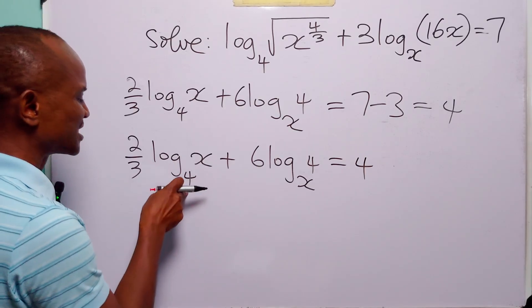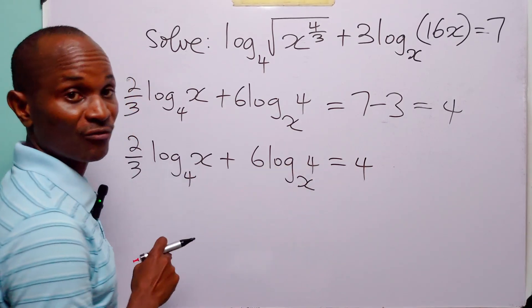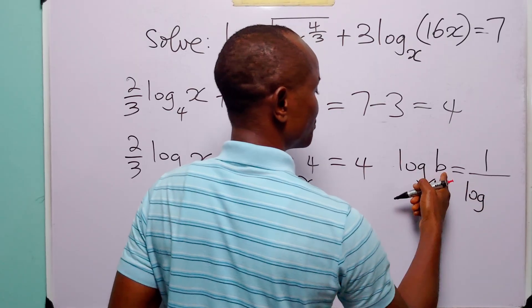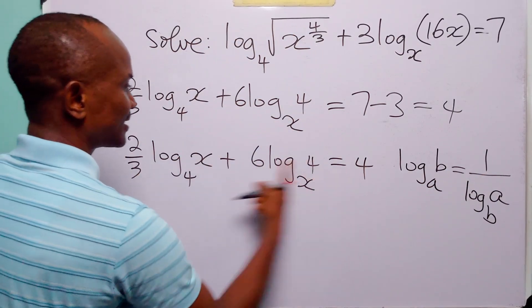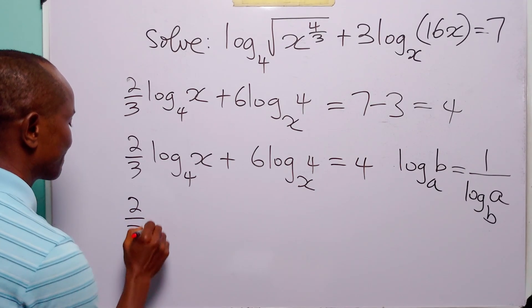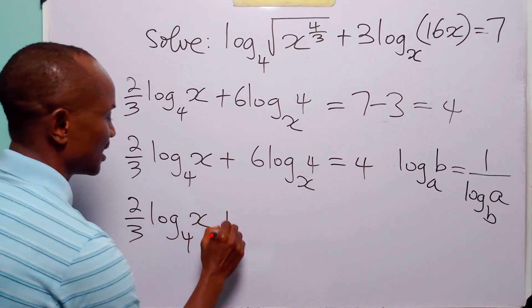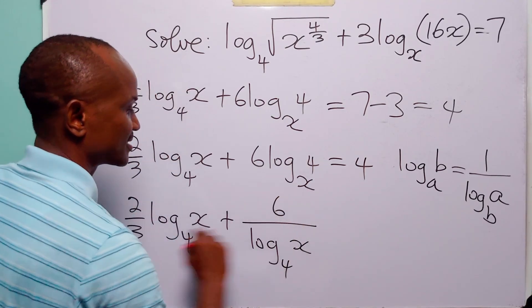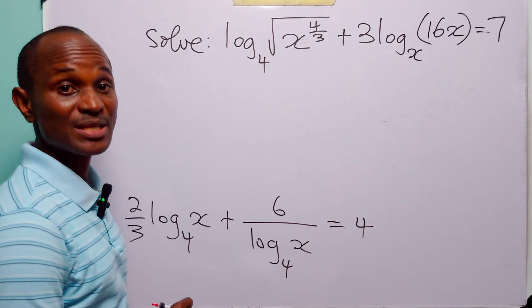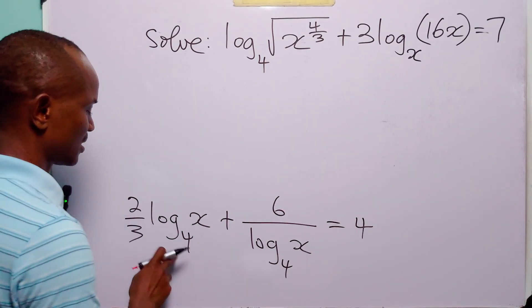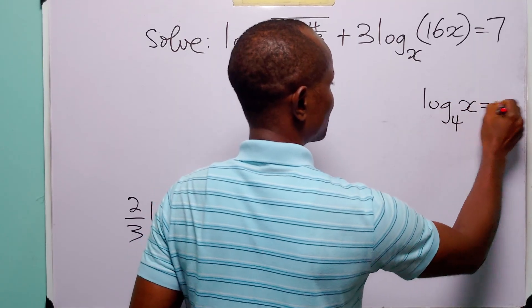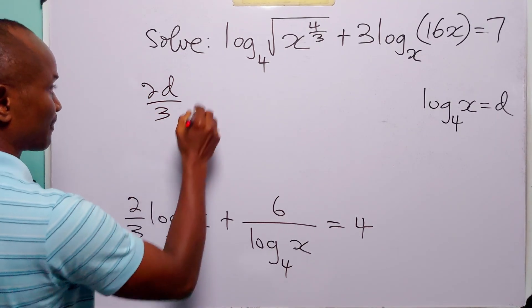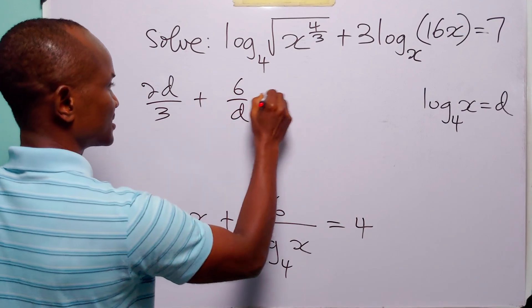Now look at this. Here we have log to base 4 of x, and here we have log to base x of 4. Remember that log to base x of b is equal to 1 over log to base a of b. So we can write this equation as 2 over 3 times log to base 4 of x plus 6 over log to base 4 of x is equal to 4. To simplify our calculation, let us do a substitution: let log to base 4 of x be equal to d. With this substitution, this equation becomes 2d over 3 plus 6 over d is equal to 4.